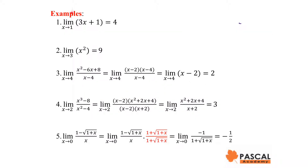Let's have some examples. Example 1: the limit of 3x + 1 as x approaches 1 is 4, since 3x + 1 can be as close as possible to 4 when x is getting close to 1. Example 2: when x is getting close to 3, x² is getting close to 9. Therefore, the limit of x² as x approaches 3 is 9.